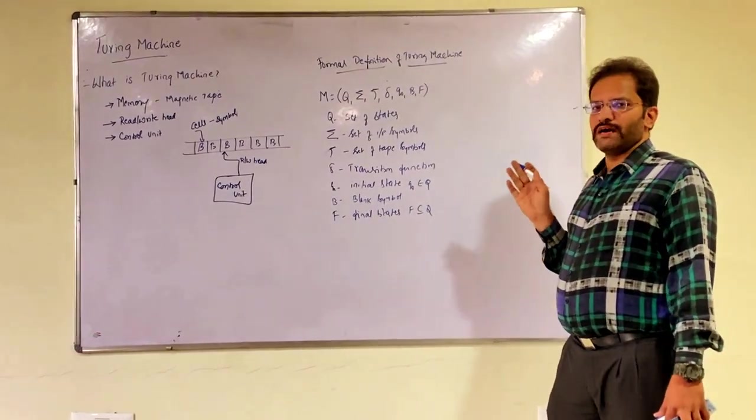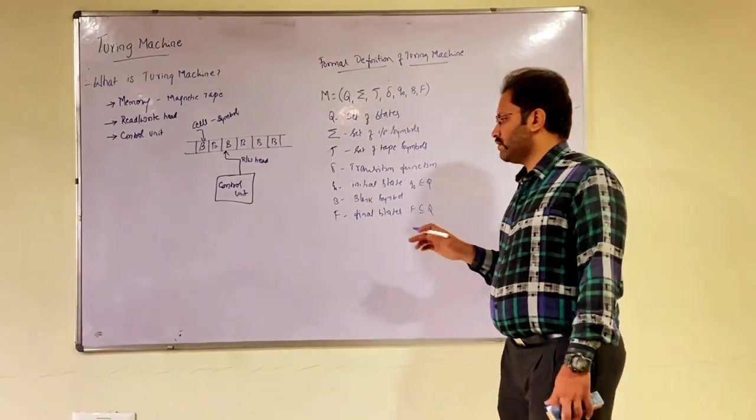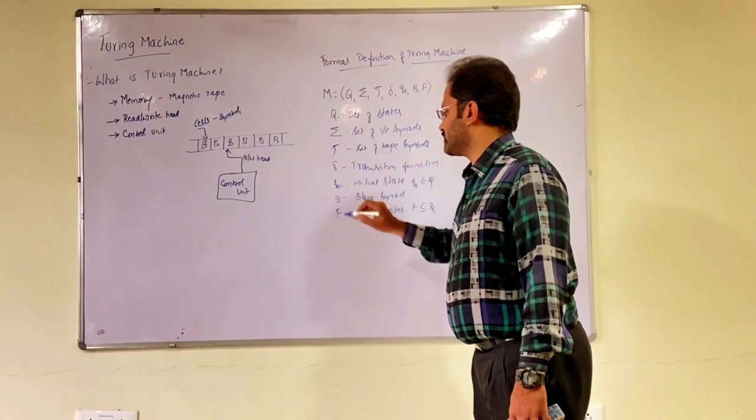Seven tuple: Q, Sigma, Tau, Delta, Q0, B and F. So internal states, input symbols, transition function, tape symbols, initial state, blank symbol and final states.